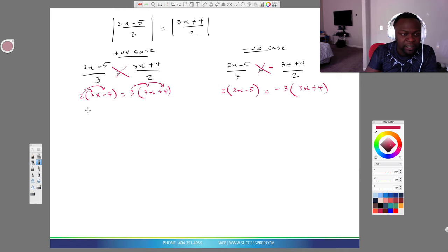So when this 2 multiplies here, you get 4x minus 10. Here it's going to be 9x plus 12. And then same thing here, 4x minus 10. And this will be, careful now, here you're going to have minus 3 times that and also minus 3 times 4. So minus 3 times this is minus 9x, minus 3 times this is minus 12. So now I want to get like terms together.